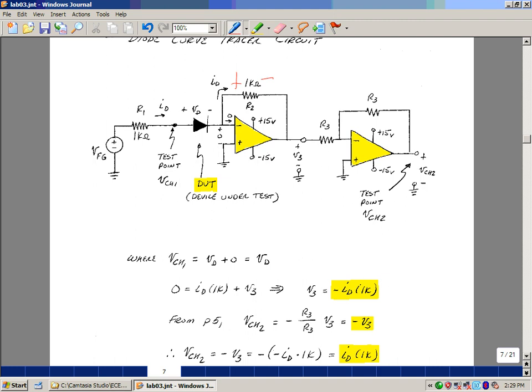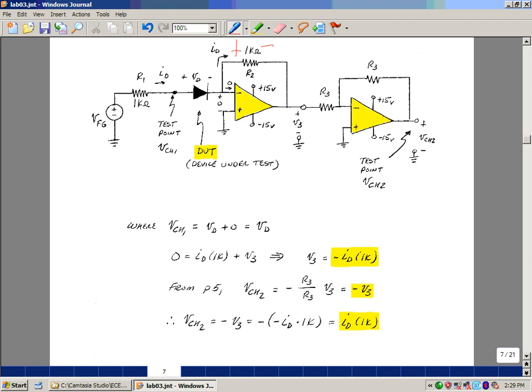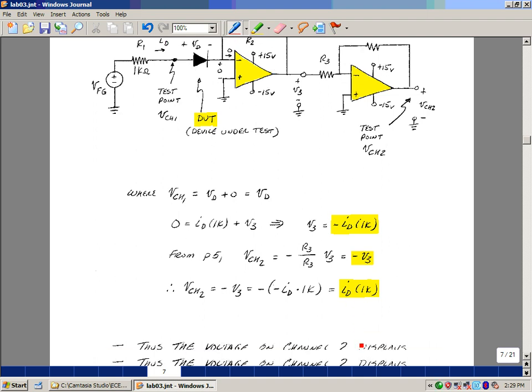One simple way is to take another inverting amplifier and just pick two equal resistors. Any values would really work. For practical purposes, as long as we keep the resistors roughly above 100 ohms and below a couple million ohms, these op-amps look fairly ideal. So now my output voltage here is just simply going to be the negative of V3, and this is going to be equal to I sub D times 1k. So now I've got a voltage that's proportional to the current that's flowing through the diode.